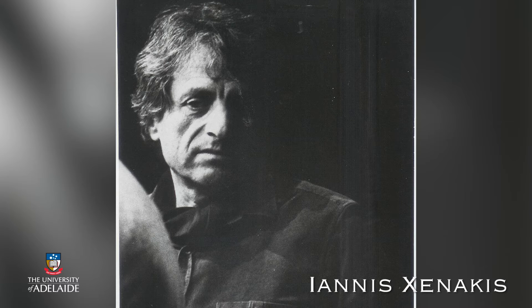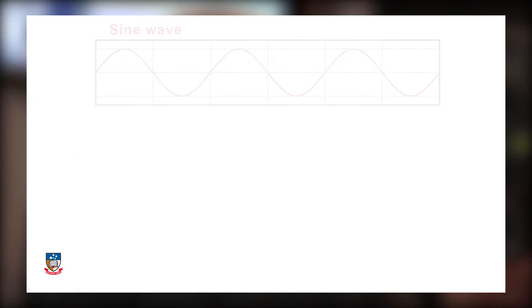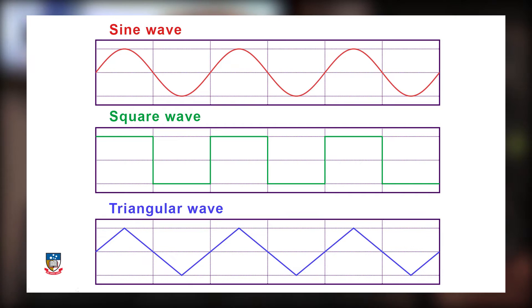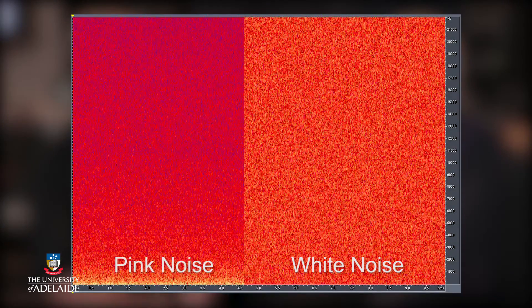If we think about a typical synthesizer, they've basically got three major parts: sound sources, sound modifiers, and output. The sound sources are the core of the new sounds we're making. You've got oscillators that can produce different types of electronic waves — things like sine waves, square waves, or triangle waves — and also noise generators that can create random bursts of sound, things like white noise or pink noise.